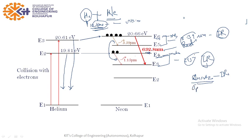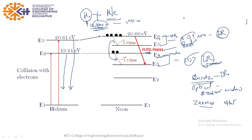We can also use a Brewster window (based on Brewster's law from polarization) or the Zeeman effect, where a strong non-uniform magnetic field is applied to the discharge tube. Using these three methods, we eliminate the IR radiation and are left with only the 632.8 nanometer emission.